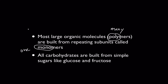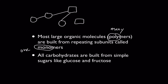So monomers are little pieces. They can be anything you want them to be. Here I'm drawing some circles and some squares. And when you hook them together into chains, we can call the chain a polymer, but each one of these subunits is a monomer. The word monomer is very generic — it doesn't tell you anything about what kind of molecule we're talking about. It could be a necklace, it could be some Legos, it could be anything.